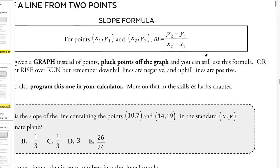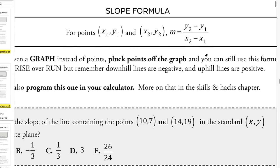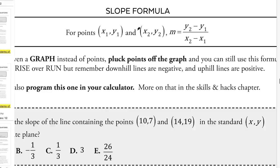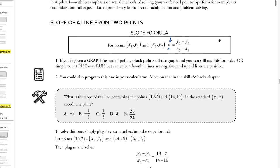So slope formula, let's talk about the slope formula. Here is the slope formula. The slope formula essentially is if we have two points, x1, y1 and x2, y2, the slope, or m—m is just a letter that we often use to represent slope—equals y2 minus y1 over x2 minus x1.